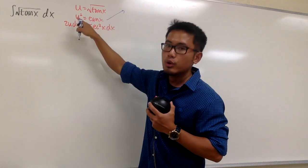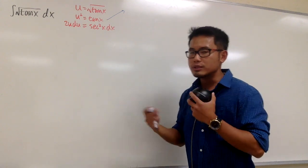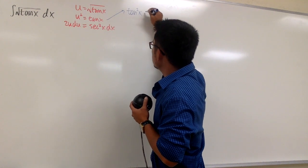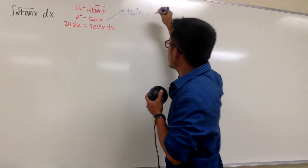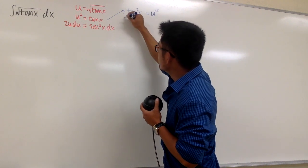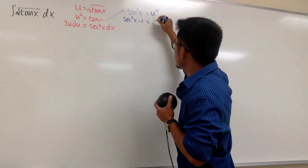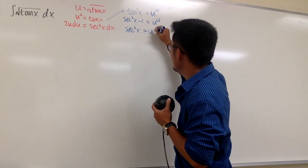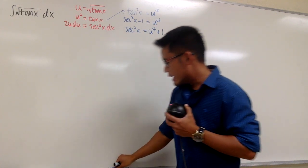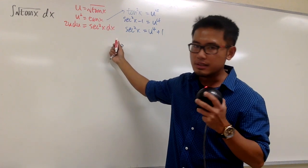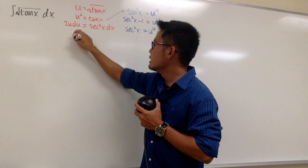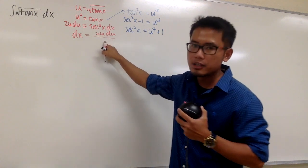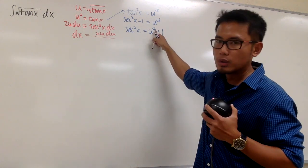Differentiating gives 2u du on the left-hand side, equal to the derivative of tangent x, which is secant squared x dx. However, secant squared x is not going to be in the u world, so we have to change it. We know tangent squared x equals secant squared x minus 1, so squaring both sides of u² = tan x gives u⁴ = tan²x = sec²x − 1, meaning sec²x = u⁴ + 1. Isolating dx by dividing both sides by sec²x gives dx = 2u du / (u⁴ + 1).